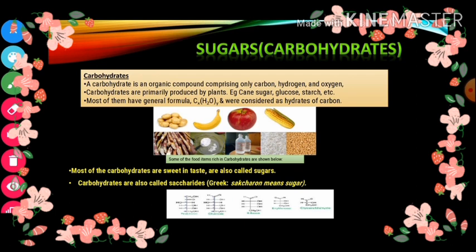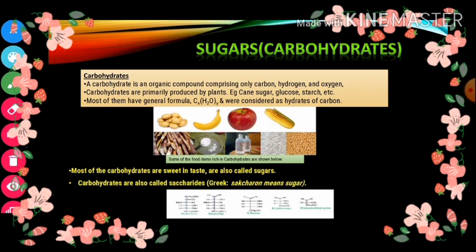In this picture, these are some examples of saccharides — carbohydrates, means sugar. Like fructose is a carbohydrate, glucose is a carbohydrate, and ribose is a carbohydrate. These are some of the examples of sugar.